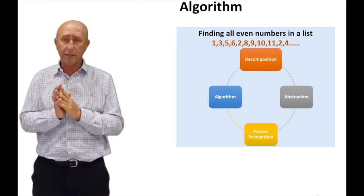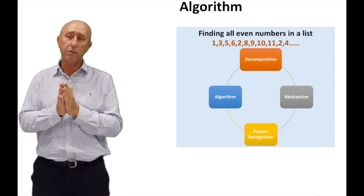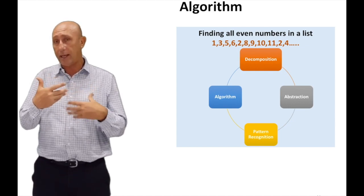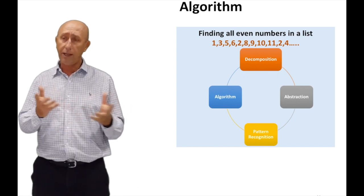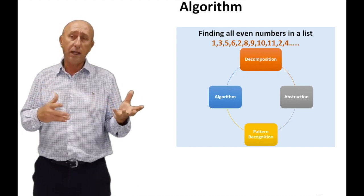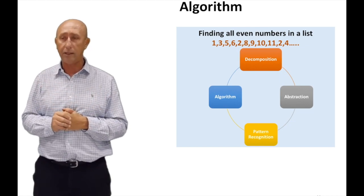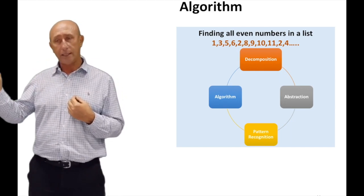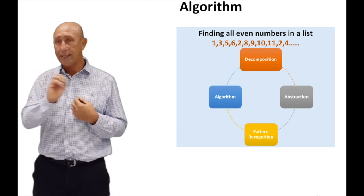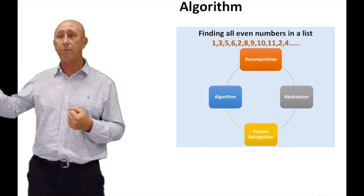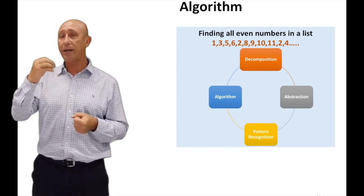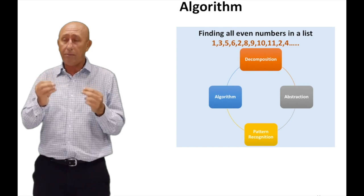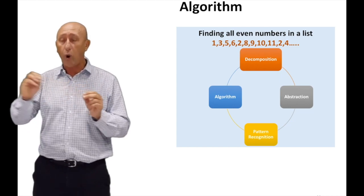If you want to apply this process of decomposition, abstraction, pattern recognition, and algorithm for it, we can examine these for a minute. And I can say, okay, there is a pattern. All even numbers are divisible by 2, and then the remainder is 0. That's kind of helped me with my solution. The second thing about it is that I have a list of numbers. And this list of numbers, they have odds and evens. I don't need to worry about the odd numbers.